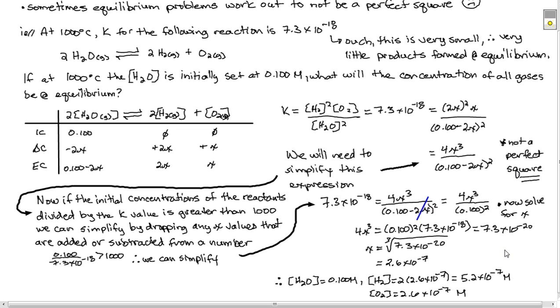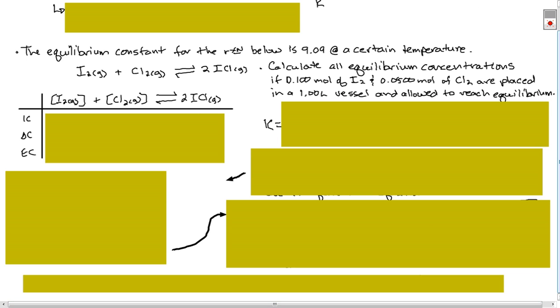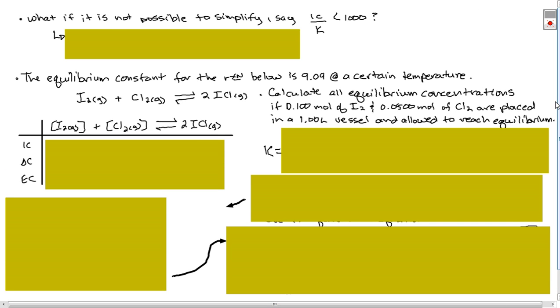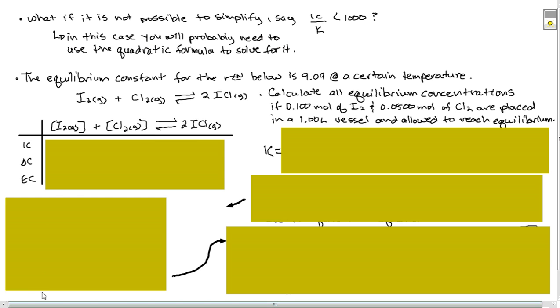Now it would be nice if things just stayed like that, but they don't. So let's take a look at another example where K is big and we get an imperfect square. So what if it's not possible to simplify? Say your initial concentration divided by K is less than 1000. What do we do? Well, in this case, we're going to use the quadratic formula to solve for it.